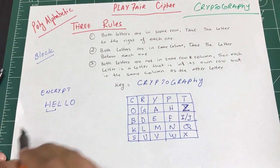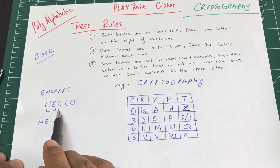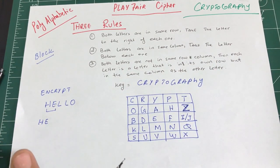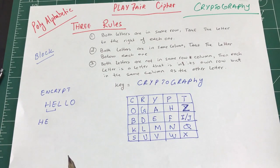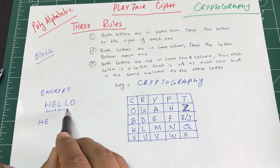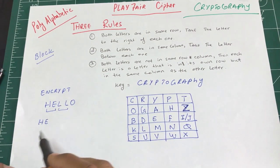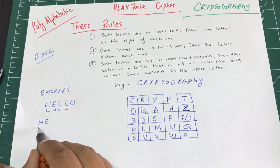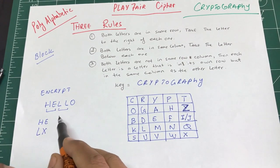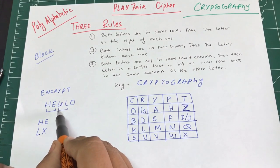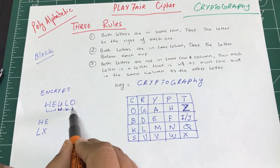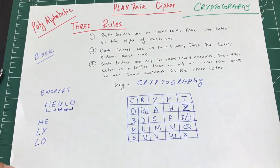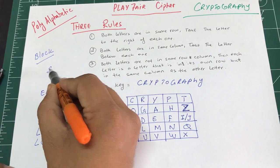The first pair is HE. Whenever you see two letters that are the same in a pair, you introduce a bogus character — X or Z — because their frequency is very low in English. So with 'hello', I can't pair LL, so I split them and insert a bogus character X after the first L, giving pairs: HE, LX, LO.